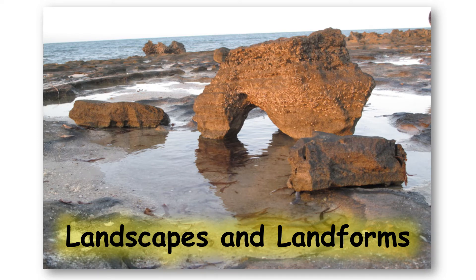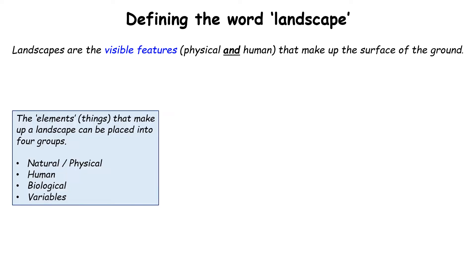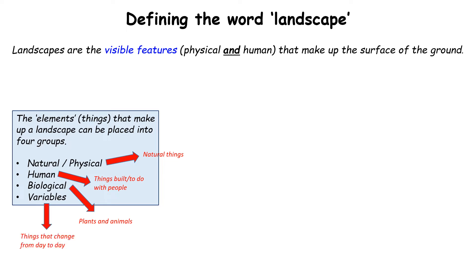Landscapes and landforms. So what is a landscape? A landscape is what you can see in an area of land on the surface of the ground. Physical means natural things, and human just means things that are there because of people. We can split everything we can see into four categories: natural or physical things that have nothing to do with humans; human things to do with people; biological, which is plants and animals; and variables, which are things that might change from day to day.